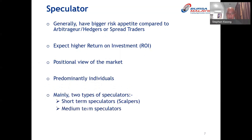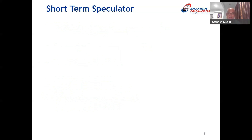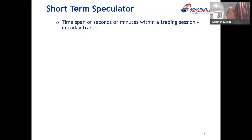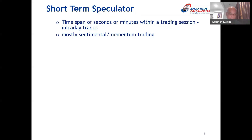Most speculators are predominantly individuals or small funds. There are mainly two types: short-term speculators, which we normally call scalpers, and medium-term speculators. Scalpers mainly trade within seconds or minutes, going in and out, whereas medium-term speculators hold for a few minutes, sometimes a few hours, but definitely within intraday.